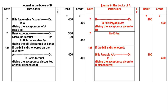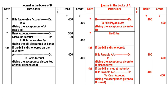Case 2 — Met at maturity. In the books of A, if the bill is met at maturity: Bills Payable account is debited to Cash account, being the acceptance given to B is met — Rs.400 in the debit as well as in the credit column. In the books of B, there will be no entry, as the payment will be received by the bank. The bank is the holder in due course since the bill was discounted there.